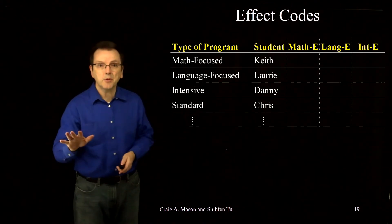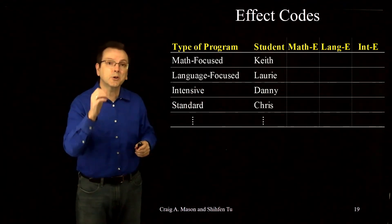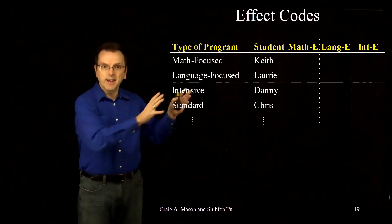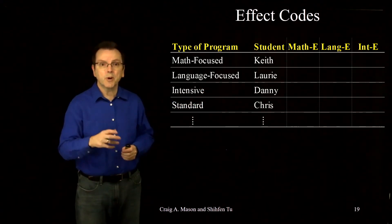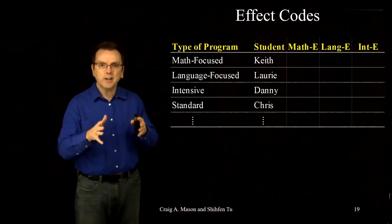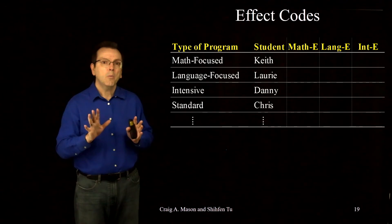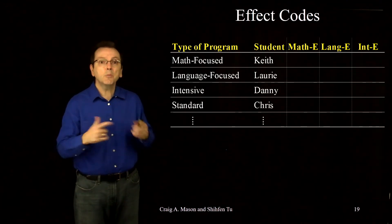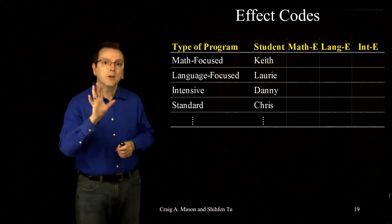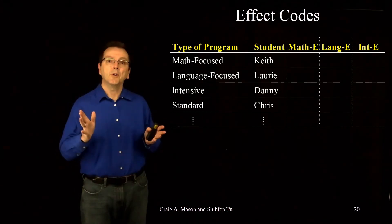We'll use the same groups for the same coding variables. We'll have a math-focused curriculum effect code. I've added E at the end just to clarify that it's an effect code. We'll also have a language-focused curriculum effect code and an intensive curriculum effect code. The standard curriculum will be that group without a specific effect code. Why don't you pause the video and using the rules we just described, see if you can complete this table on your own. Restart the video when you're ready. Let's see how you did.